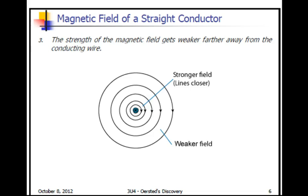The strength of the field is weaker the farther we get from the wire. There's a stronger field close to the wire and a weaker field farther away from the wire.